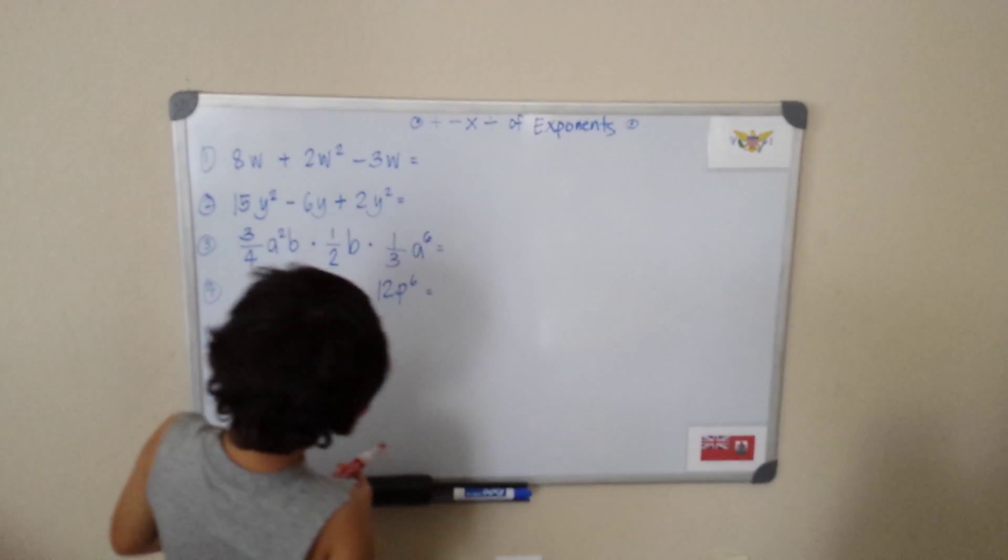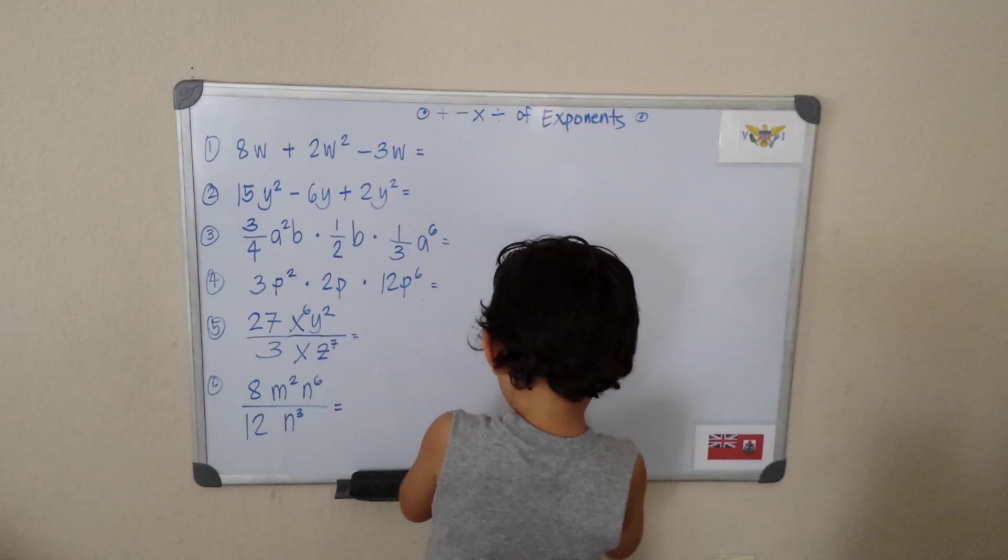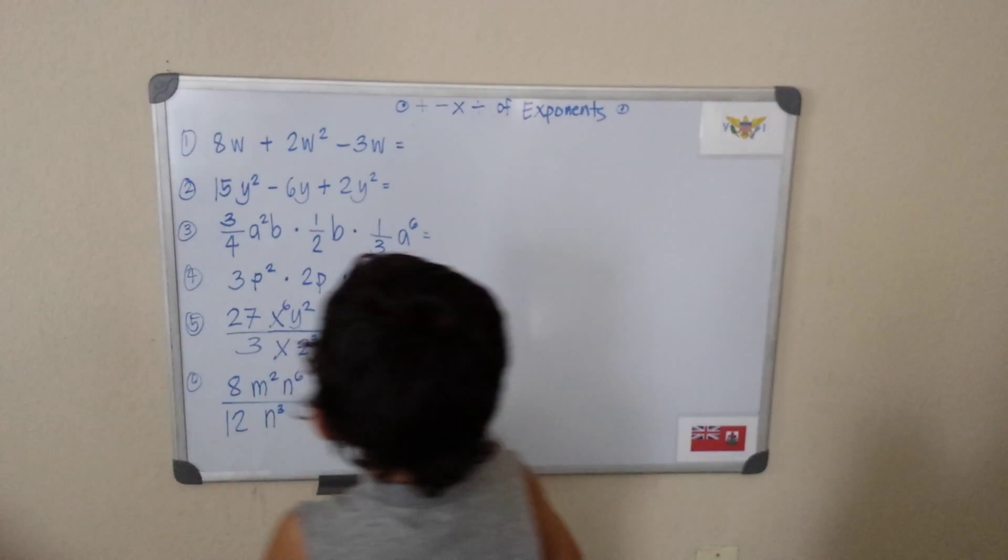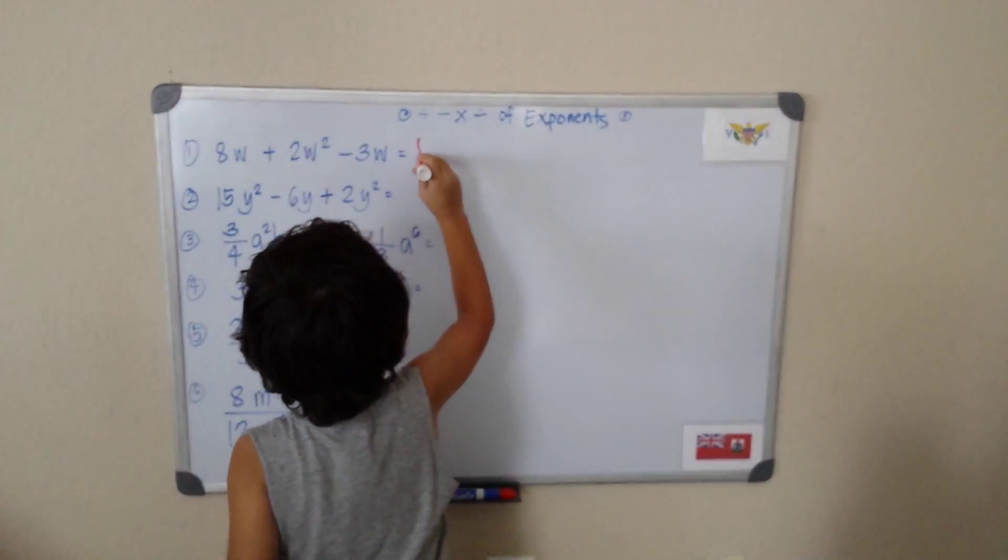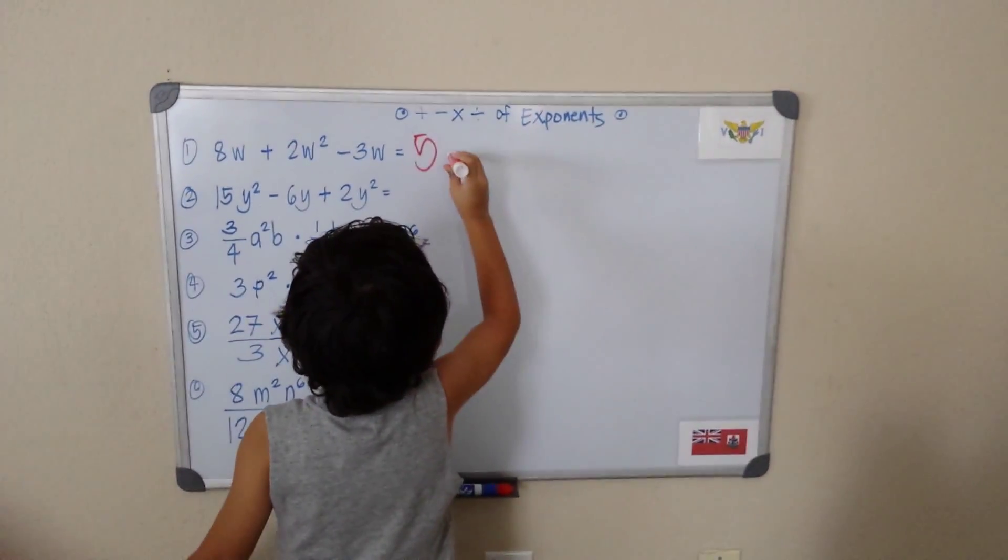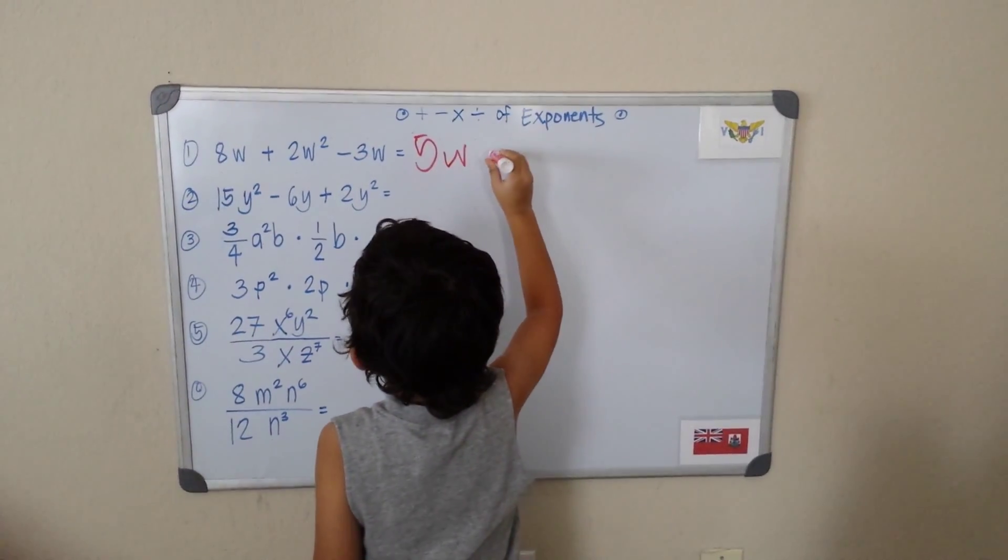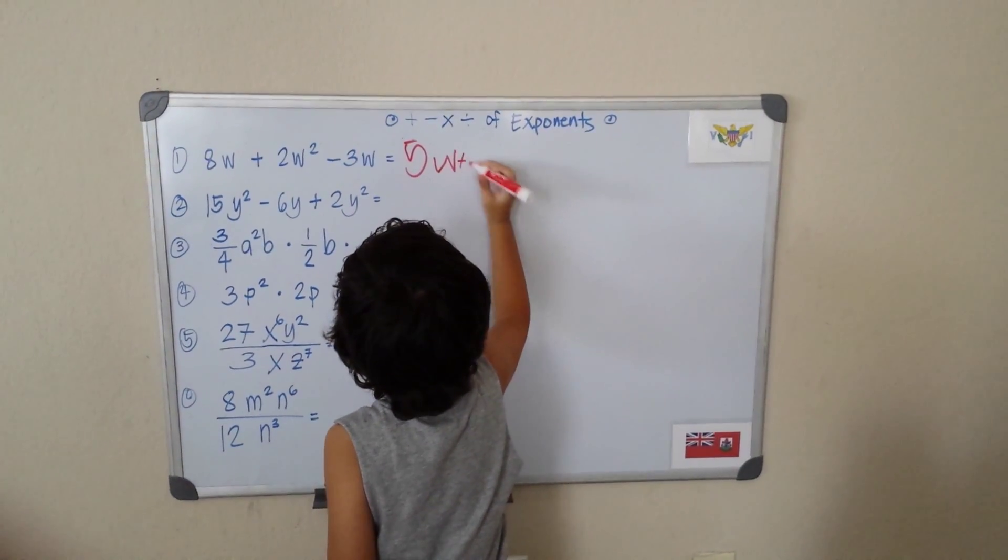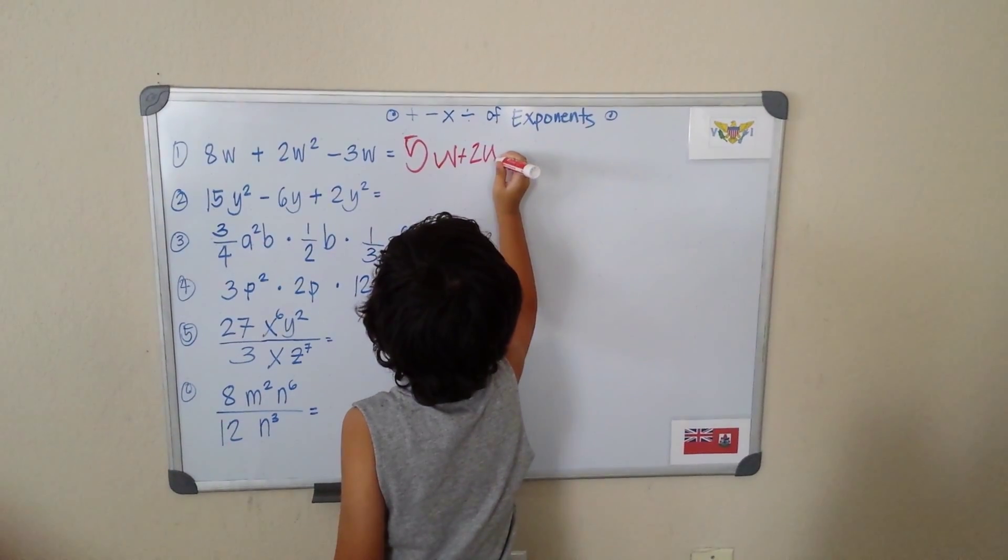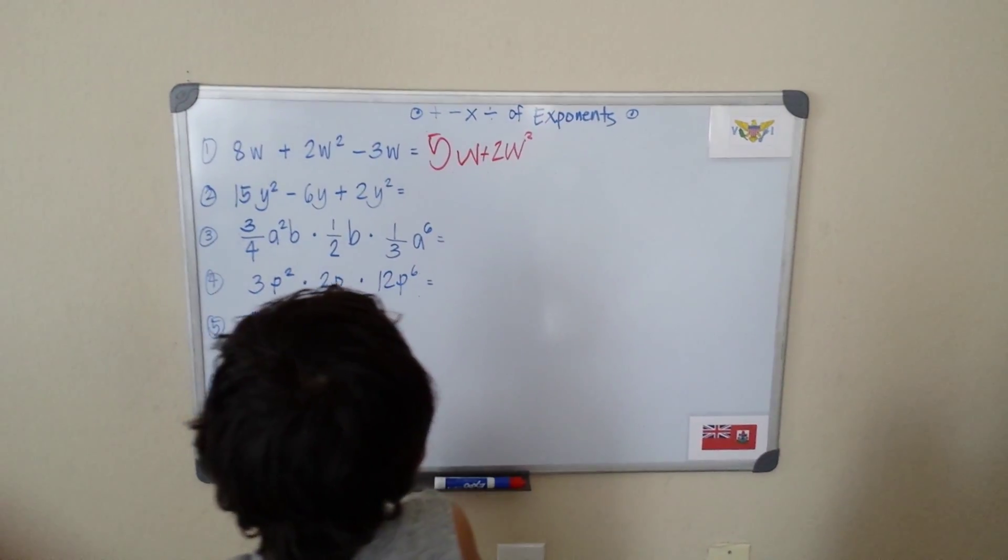So I can combine those W's together. 8 minus 3 will give me 5W, and we plus the 2W raised to the second power.